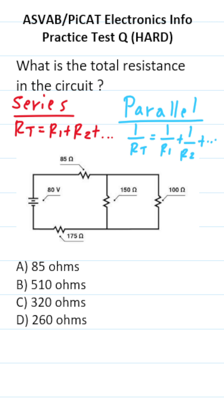The first thing we have to do is calculate the total resistance of these two resistors that are in parallel with each other. And to do that, we're going to use this formula here.